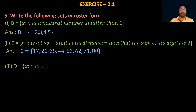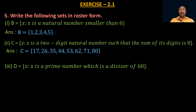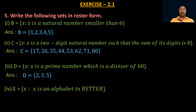Third: D = {x : x is a prime number which is a divisor of 60}. The prime divisors of 60 are 2, 3, and 5 only. So D = {2, 3, 5}. Fourth: E = {x : x is an alphabet in the word 'BETA'}. The letters in 'BETA' are B, E, T, A. So E = {B, E, T, A}, giving four elements in set E.